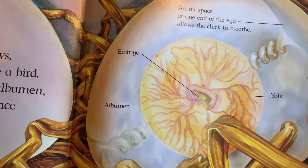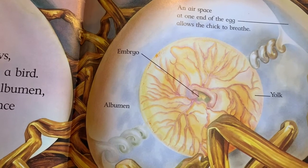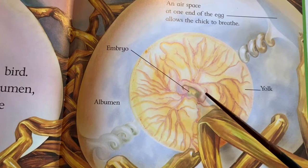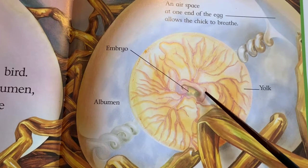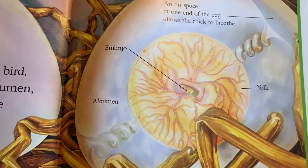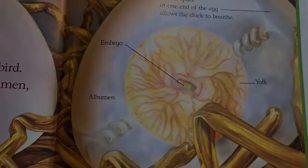And for eggs with chicks in them, there is a little part called the embryo. An embryo is a white spot that will grow into a chick. Here are some fun facts: did you know that hummingbirds have the tiniest eggs and ostrich eggs are the largest?